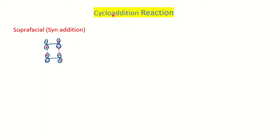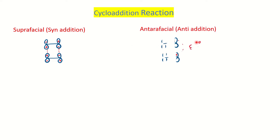In cycloaddition you have two reactants which fuse to give a cyclic product. Looking at the orbital picture of two alkenes, when same-phase interaction is present — plus-plus and minus-minus — forming a bonding interaction, this type of addition is called syn addition or suprafacial addition. On the other side, if you have different-phase interaction, one side is plus-plus and the other has plus-minus, which cannot form a bond.